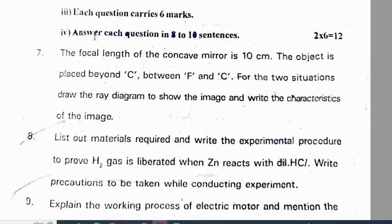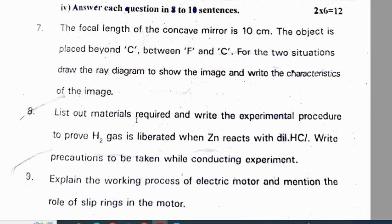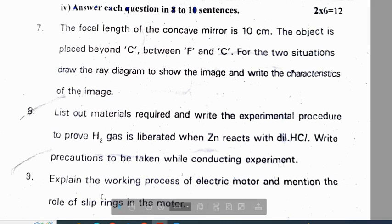From the Meitchell district pre-final 2: The focal length of a concave mirror is 10 cm. The object is placed beyond C and between F and C — for these two situations, draw ray diagrams. Write the material required and experimental procedure to prove hydrogen gas is liberated when zinc reacts with dilute hydrochloric acid. Write procedure and precautions for conducting the experiment. Explain the working process of an electric motor.